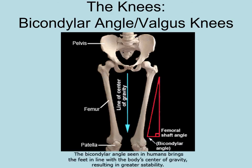The bicondylar angle shows how our knees come together in the middle. There's a line of center of gravity that goes down the very center of our body all the way through to our feet. Our entire skeletal body plan is oriented to have that line of gravity right in the middle going down through our pelvis.